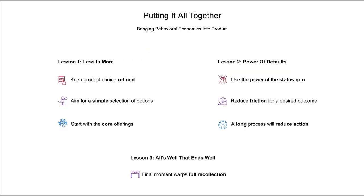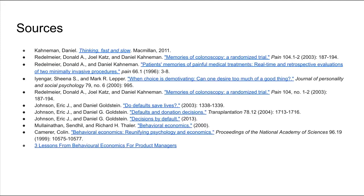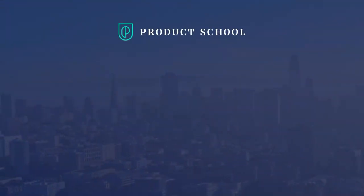So, putting it all together. Lesson one: less is more — keep those product choices refined and prevent user paralysis on your platform. Lesson two: remember the power of defaults — harness the power of the status quo and reduce friction wherever you can. Lesson three: all's well that ends well — remember that the final moment warps the full recollection and always try to finish on a good note. And that's all. Thanks for joining, and if you would like some further reading around the topics discussed today, check out the links on the screen.